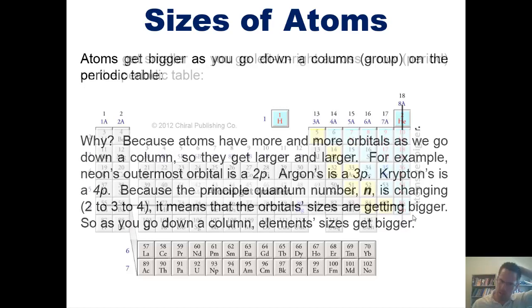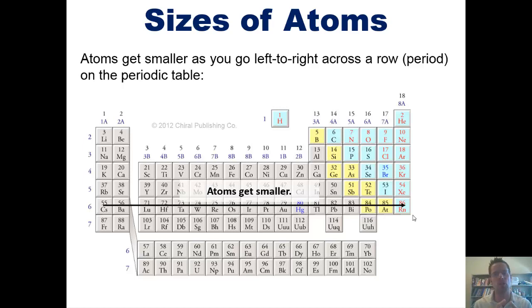Now, this is kind of not as intuitive, but atoms actually get smaller as you go left to right across a row or a period. As you think about this, you might wonder why. Because as you go across a row from left to right on the periodic table, you're getting more electrons added to each element. For example, oxygen has one more electron than nitrogen, which has one more electron than carbon, and so forth. So you might be tempted to think oxygen should be bigger than nitrogen, and nitrogen should be bigger than carbon because you're getting more electrons.